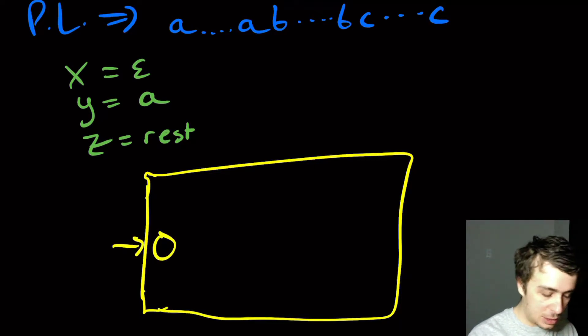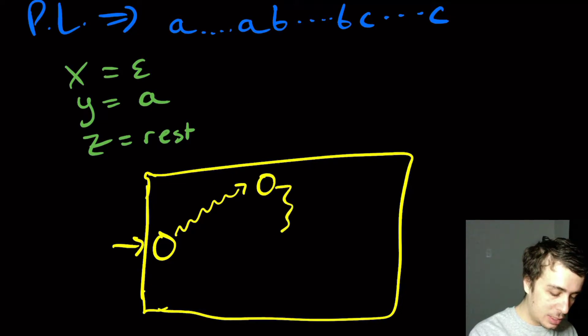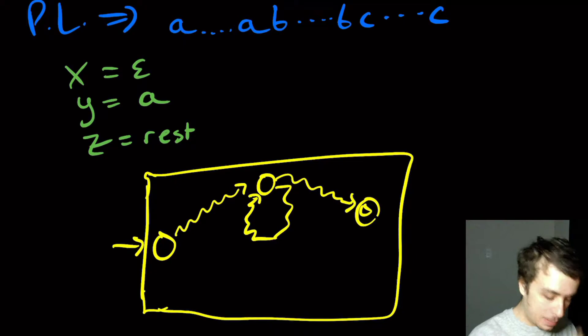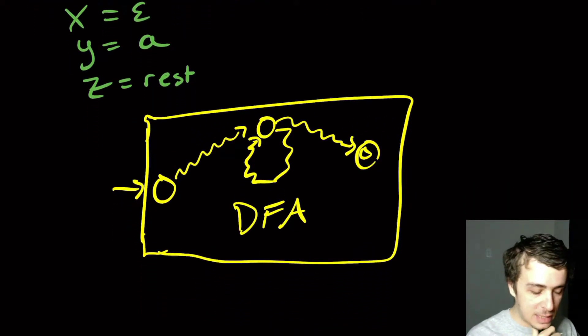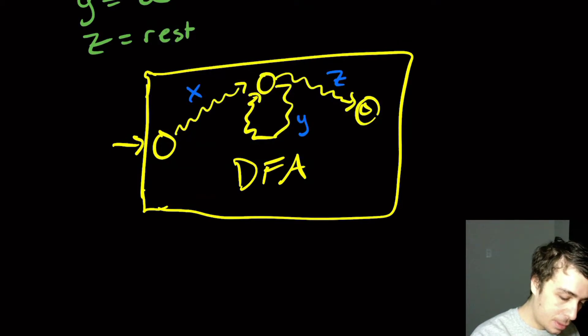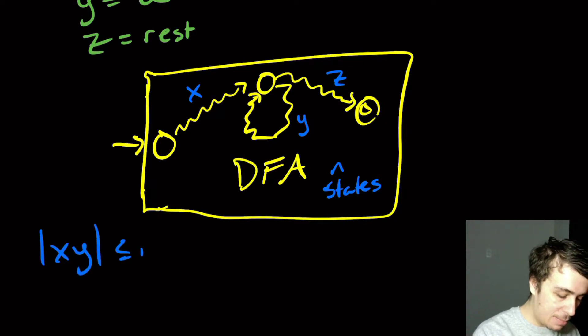So we had this start state at the beginning, we had some number of transitions, and then we had a number of transitions that went back to a state that repeated, and then we went to a final state. So this was in a hypothetical DFA for the thing. Well, I guess really for any DFA this is true. And what we saw that if we broke this string up into pieces, x, y, and z, then what we saw was that if this thing had n states, that the length of x, y was at most n, because the repetition must occur within the first n characters.